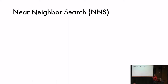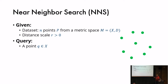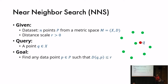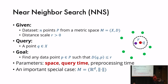The first result is about nearest neighbor search. The setup: we have a metric space with a dataset of points and a distance scale r. We want to build a data structure that takes a query point and returns any data point within distance r. The parameters we care about are space and query time, and an important special case is when the problem is defined on R^d with respect to some norm.